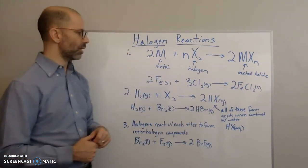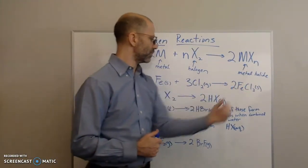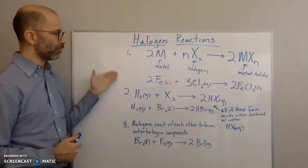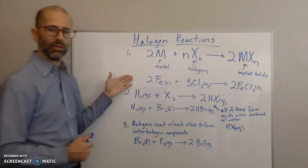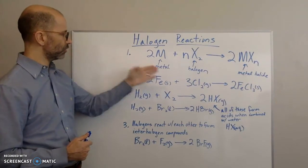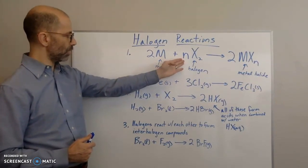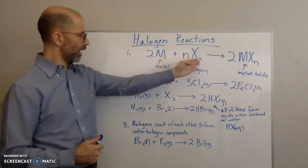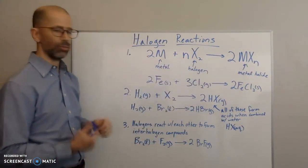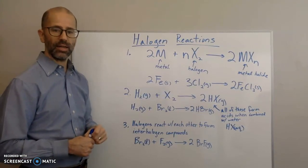So that's the first type of reaction you want to be aware of—that halogens can react with metals. Depending on the molar amount of the halogen, that will determine how many halide atoms will be in the compound per one mole of your metal.